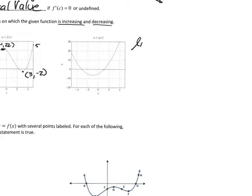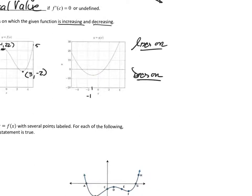Now for the second curve — we'll find where it's increasing and decreasing. Looking at the y-values, they're coming down and all the tangent line slopes are negative, until it hits a horizontal tangent — that's a critical value. Then the tangent lines have positive slope. This critical value occurs at x equals negative one. Since there are no arrows, the function is decreasing from negative five to negative one and increasing from negative one to about four.